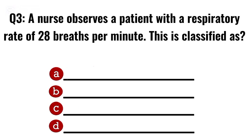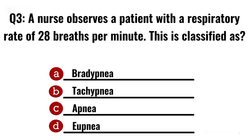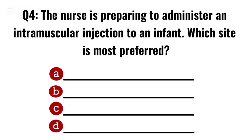Question 3. A nurse observes a patient with a respiratory rate of 28 breaths per minute. This is classified as? Correct option B: Tachypnea.